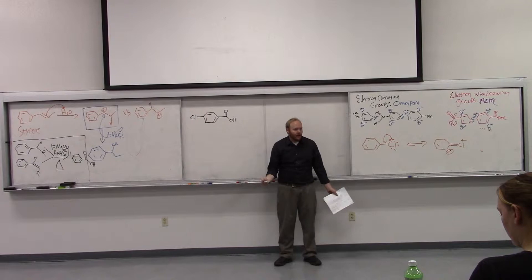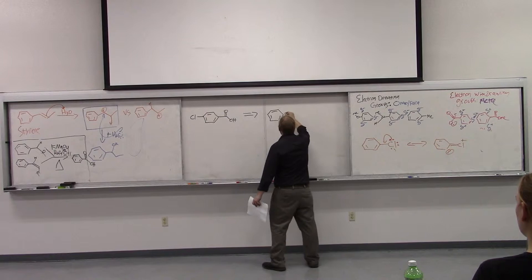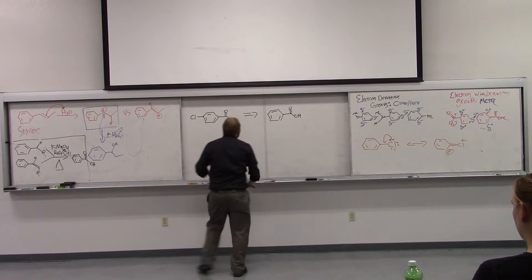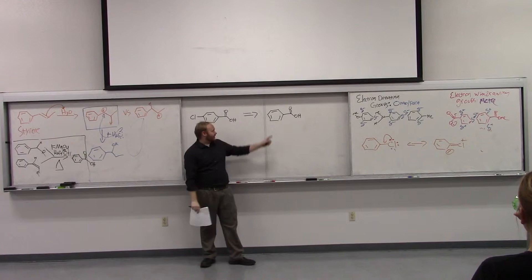Let's say you want to make this. You want to make para-chlorobenzoic acid. And let's hypothetically say you can't buy it, other than in the real world you would just buy it. But let's say hypothetically this wasn't available to buy and you want to make this molecule. How would we make it? Well, if you said let's just chlorinate benzoic acid, that would be wrong because we know if we start from benzoic acid, we know benzoic acid is a meta director.